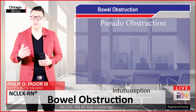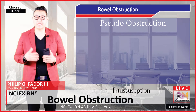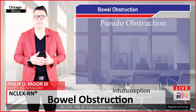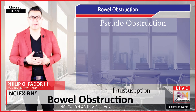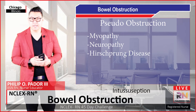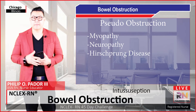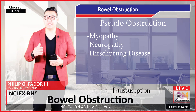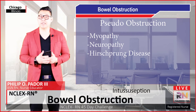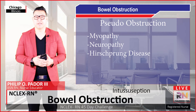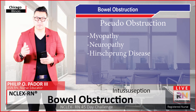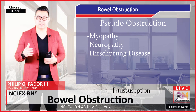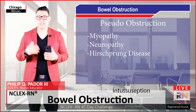Now let's look at pseudo-obstruction. Pseudo-obstruction, as the name implies, is a pseudo or false obstruction, also known as ileus, but regardless it does result in obstruction of the bowel. The main examples are myopathy — problems with the muscles — and neuropathy — problems with the innervation of the bowel — and a specific condition known as Hirschsprung disease. Myopathy means there is no movement or peristaltic contractions, and thus the food just doesn't pass through, leading to obstruction.